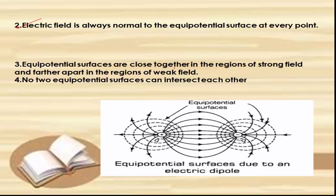The third property: equipotential surfaces are close together in regions of strong field and far apart in regions of weak field. In this diagram of equipotential surfaces due to an electric dipole, at certain regions the equipotential surface lines are very close to each other, while at other regions the lines are far apart from each other.